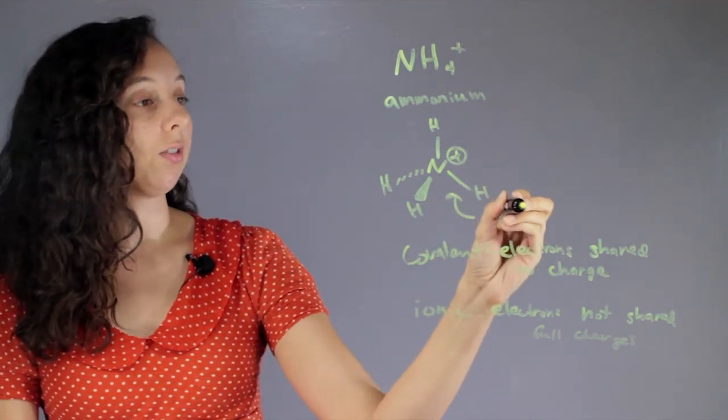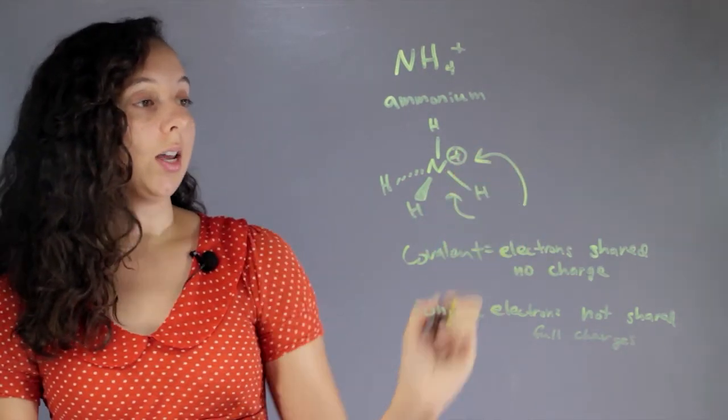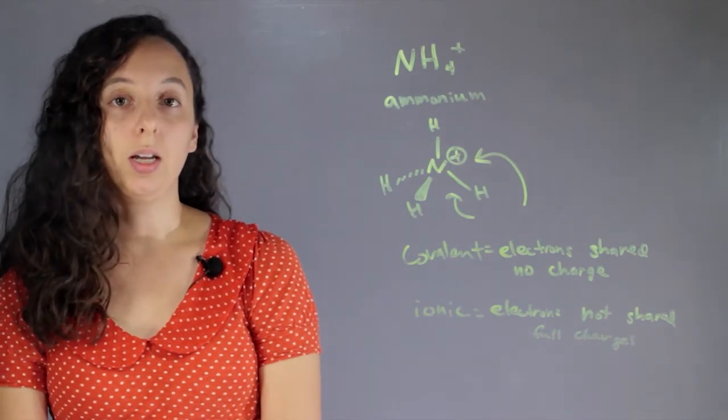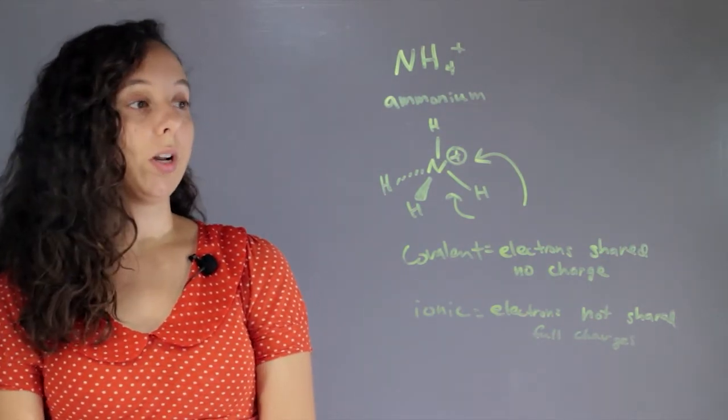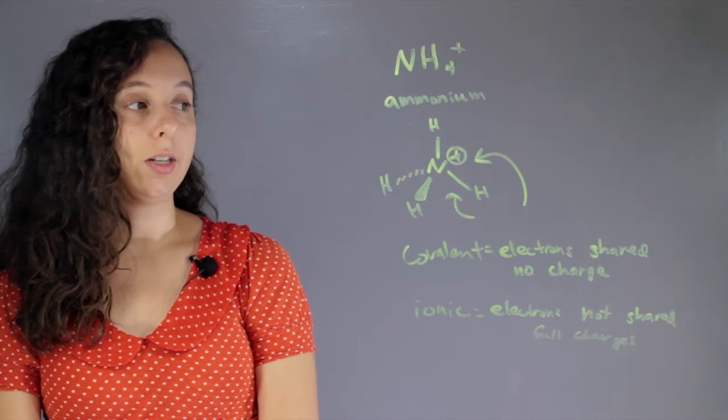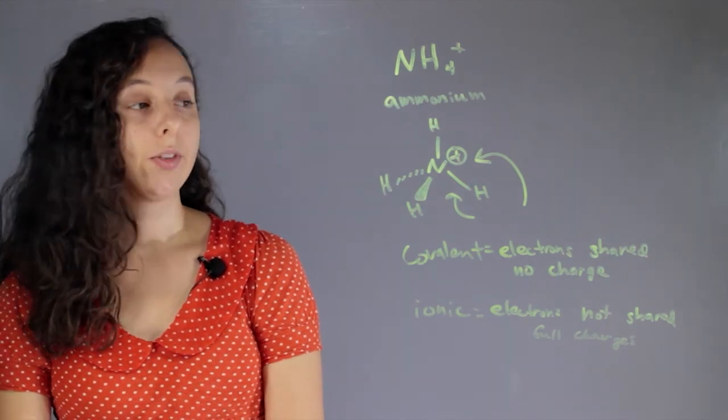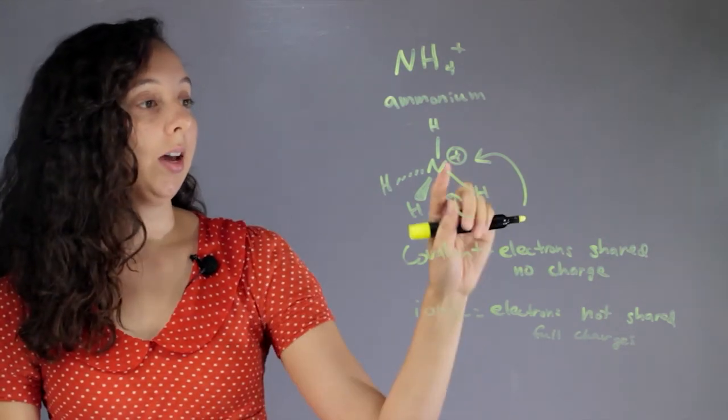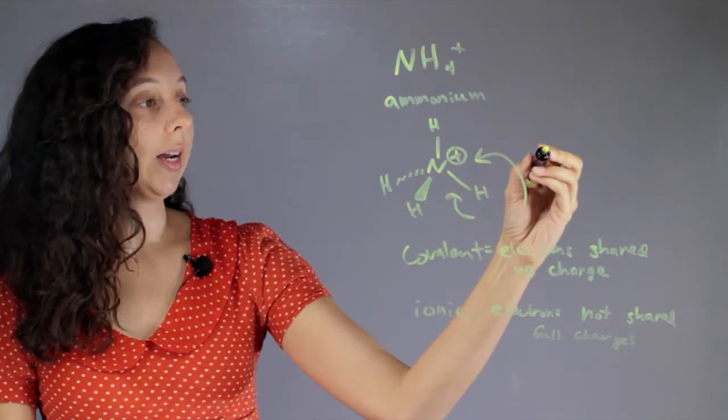Now, this positive charge on the nitrogen is capable of forming an ionic bond. So what it needs to form that bond is to have a counter ion. So let's take something—since this is one positive, let's take something that's one negative.